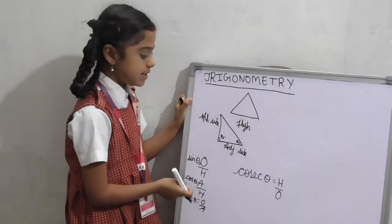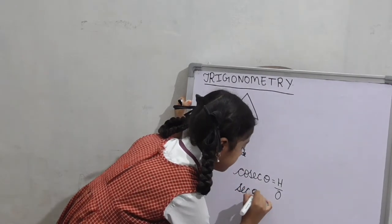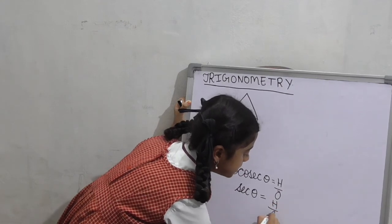Reciprocal of cos theta is secant theta. Its formula is hypotenuse by adjacent.